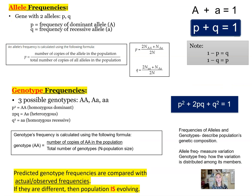So let's take a look at allele frequencies and genotype frequencies, because those two concepts are going to be very important as far as understanding the changes that happen within the population. An allele is a version of a gene. Looking at single gene traits, we have a dominant allele — represented with big A — and a recessive allele. We use the letter P to represent dominant allele frequency and Q to represent frequency of the recessive allele. If you know your P, you can always find Q, and vice versa — which will come in handy when we explore problems.